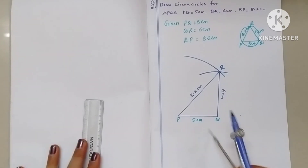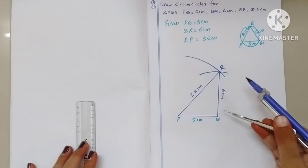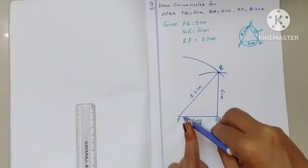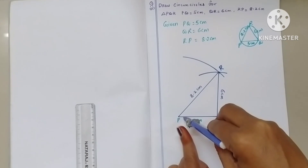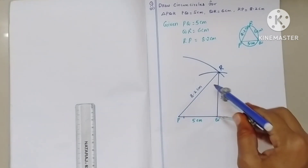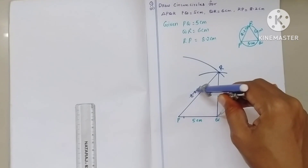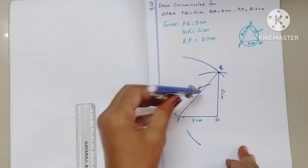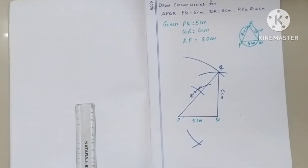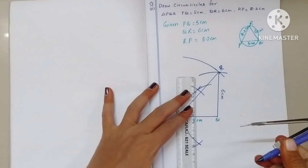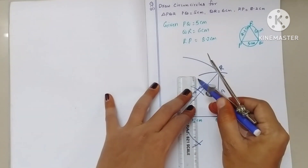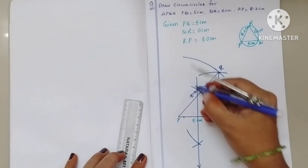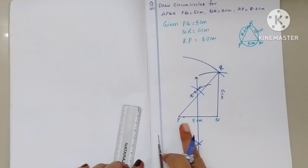Now we have to draw the circumcircle to this triangle. For that, first of all we have to draw the perpendicular bisectors. Take a radius more than half and with Q as center draw arcs on both sides of the line. With the same radius again draw arcs on both sides. Draw a line through the points of intersection — this is the perpendicular bisector of PQ.